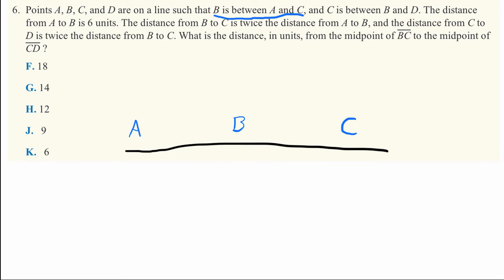And then the next clue, C is between B and D. So here is C, this was B. So for C to be between B and D, then D is going to have to be somewhere over here, and we'll have to extend our line a little bit to accommodate D.